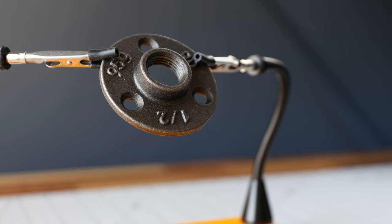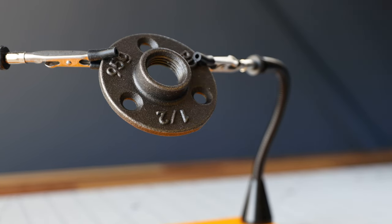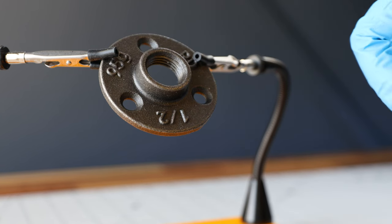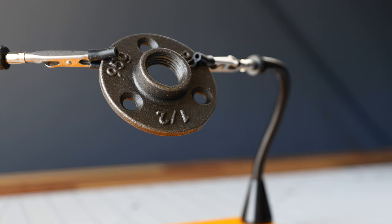When talking about through holes versus blind holes, the biggest difference is that a through hole uses a pull plug, while a blind hole uses a push plug.